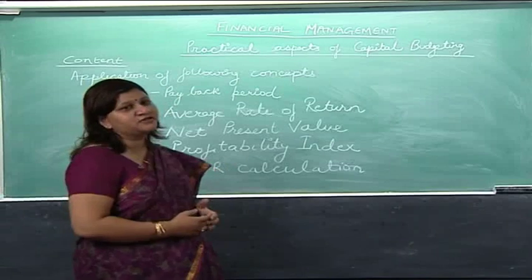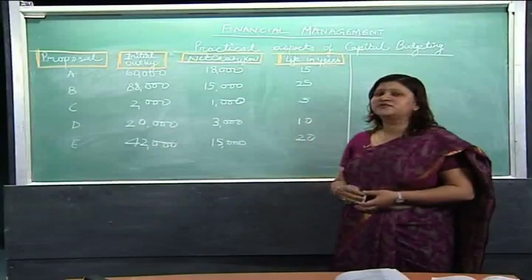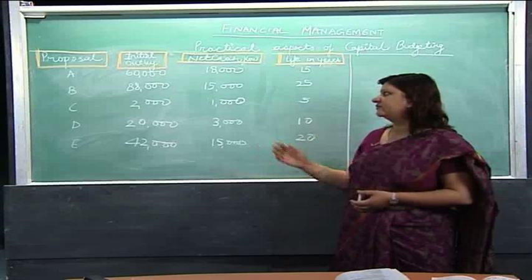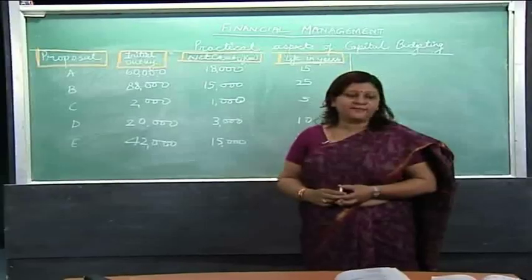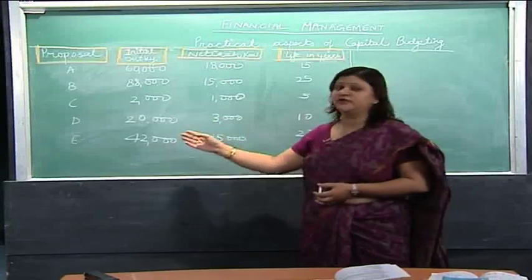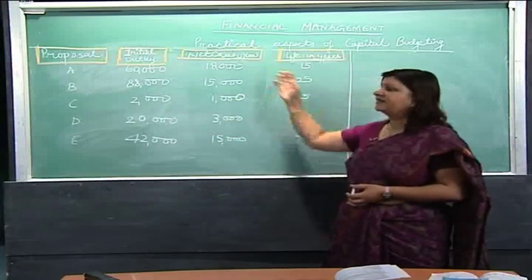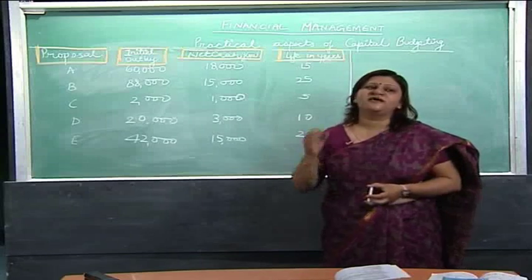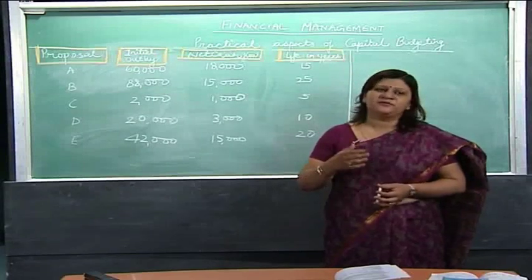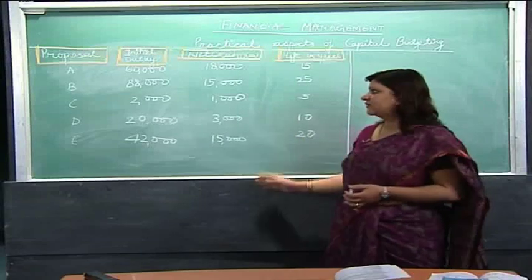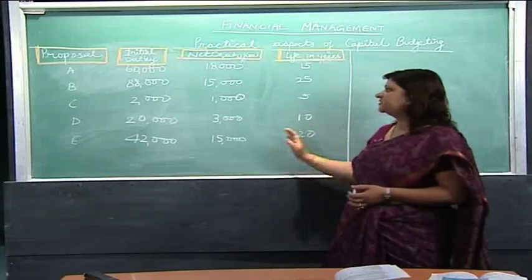Let us take up a question where we can analyze these techniques. This question has five proposals, against which outlays, net cash flows, and project lives are given. Initial outlay means the capital investment required to be made in the zero period or at the beginning of the proposal. Net cash flows have already been computed — derived from net profit by subtracting tax and adding back depreciation — so that portion is skipped. The life of each project is also given.